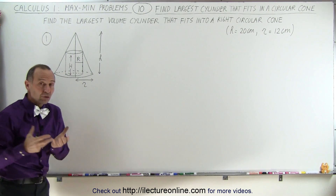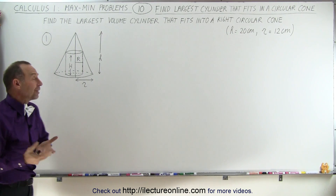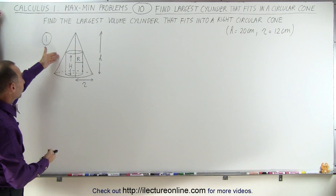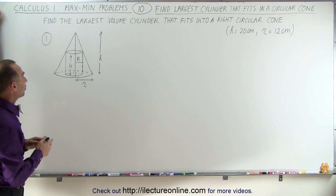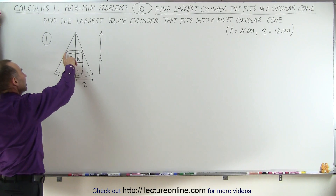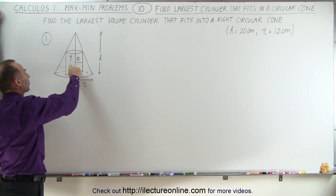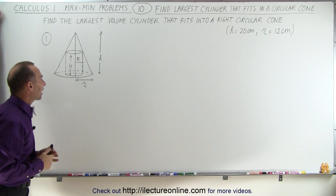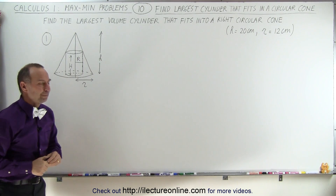First we need to draw a picture of that, and to make it easier I've already done so. Notice the height of the cylinder is capital H and the radius of the cylinder is capital R.